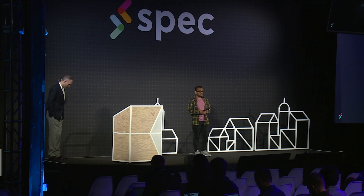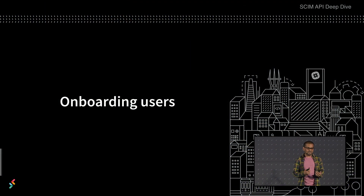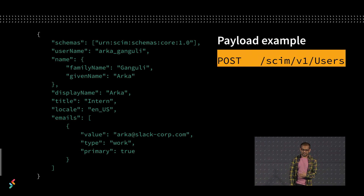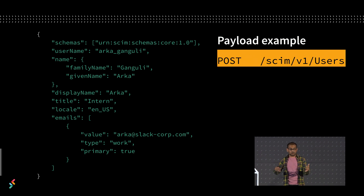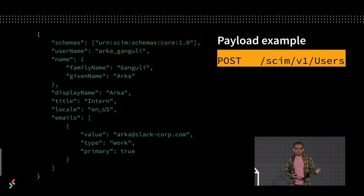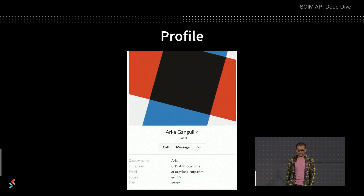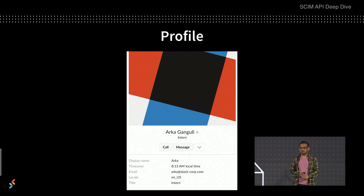The first case we're going to look at is onboarding users. This is pretty important because you've just bought Slack, you want your employees to start using it, but you need to be able to give them access to it. You could do this manually via the UI, but that's not feasible for larger companies, so you'd want to use the SCIM API and do it programmatically. Let's say you have a new employee, his name's Arka, and he's an intern at your company. You add him to your employee directory, then use our SCIM API to send a POST request with all the relevant information, and it'll create that user profile in Slack. All the fields we're sending — such as username, name, display name, and title — are all set by the SCIM standard. Slack didn't make any of this up; any other system you integrate with will also support the exact same schema.